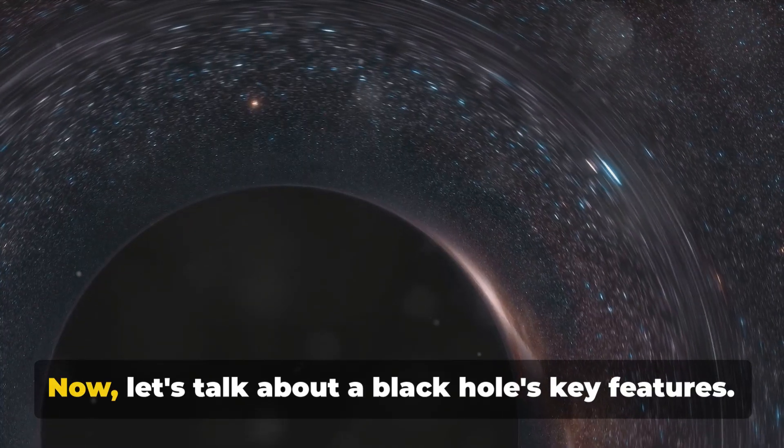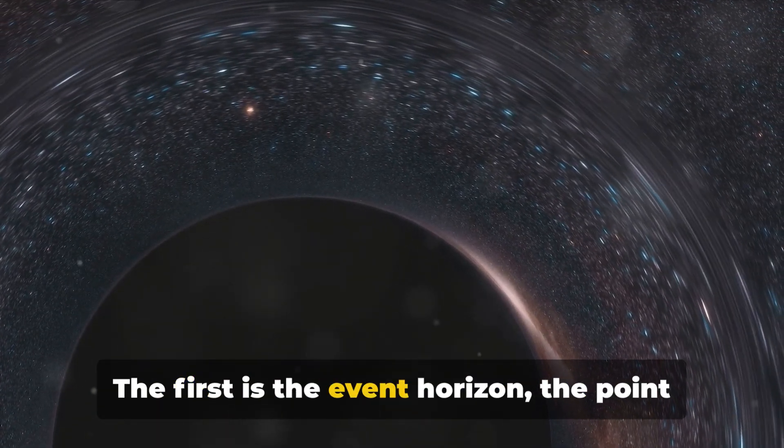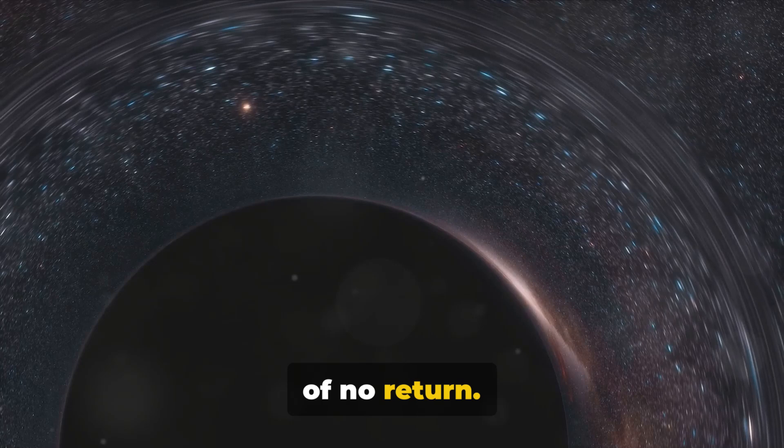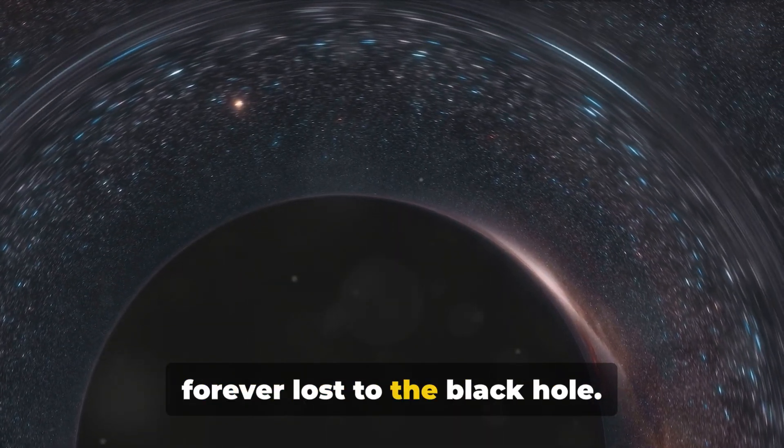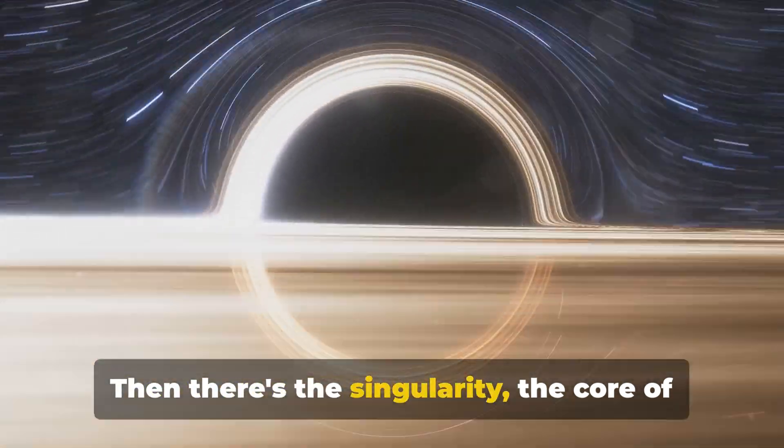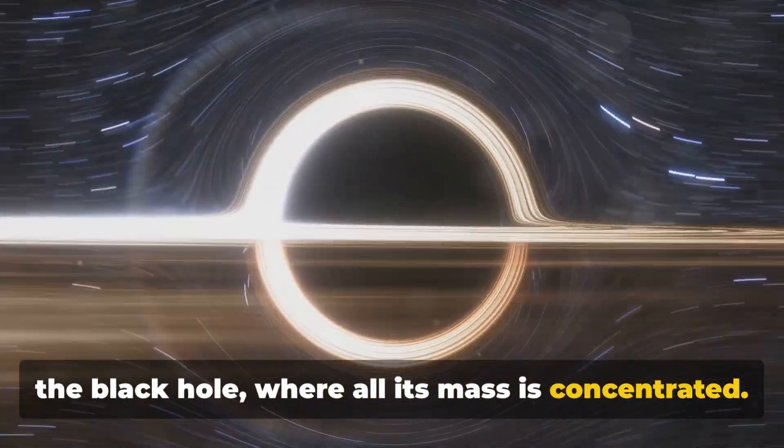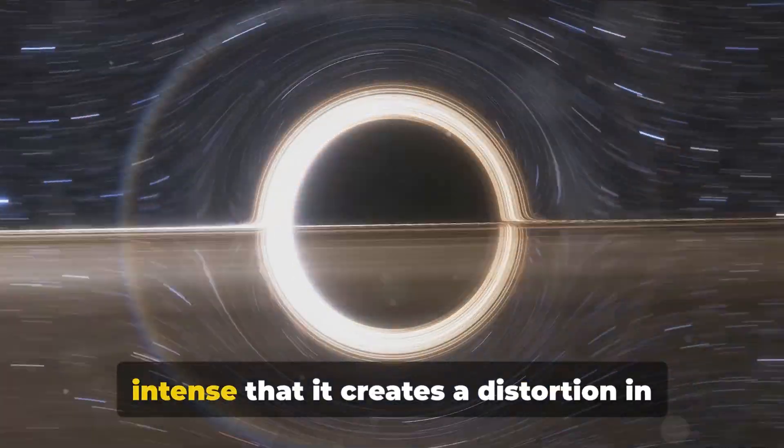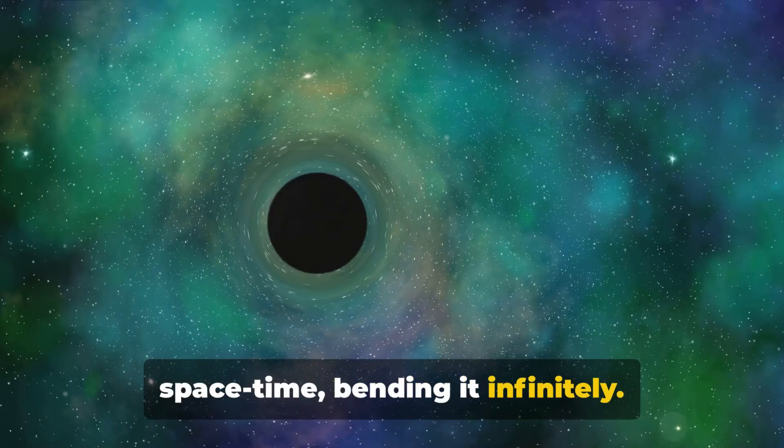Now let's talk about a black hole's key features. The first is the event horizon, the point of no return. Anything that crosses this boundary is forever lost to the black hole. Then there's the singularity, the core of the black hole, where all its mass is concentrated. Here the gravitational pull is so intense that it creates a distortion in space-time, bending it infinitely.